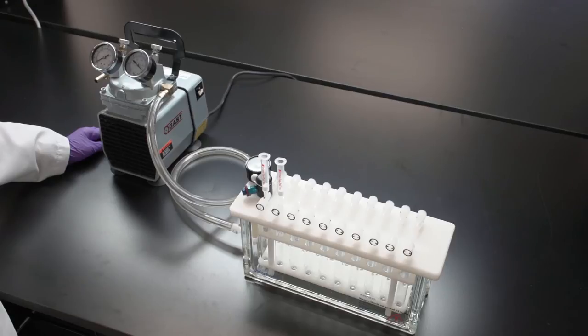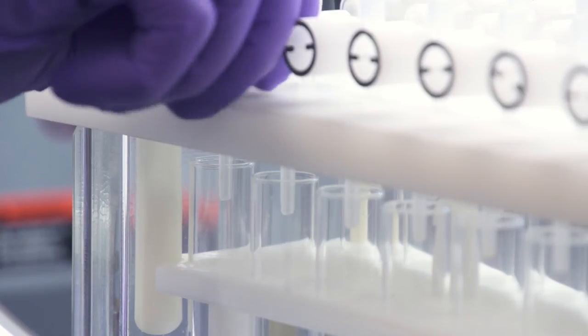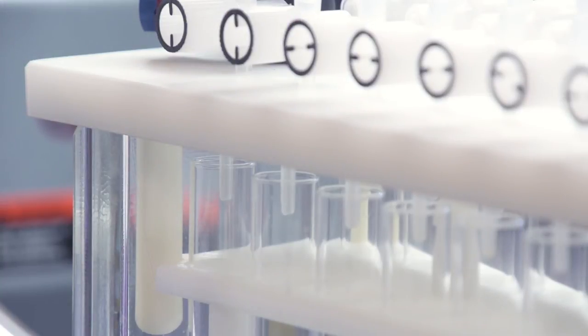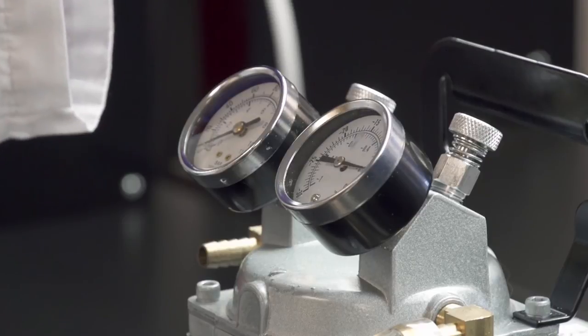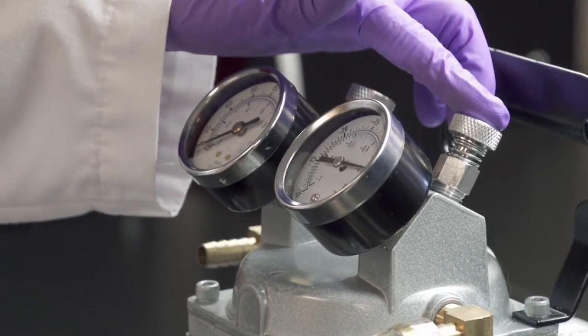Continue flow until all the liquid has been drawn through the cartridges. To ensure complete elution in the final elution step, turn all the stopcocks to the open position and increase vacuum momentarily two to three times to draw residual droplets through the cartridge.